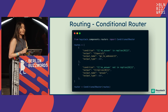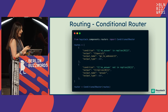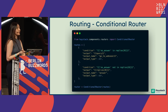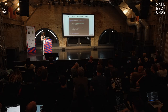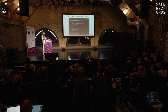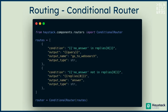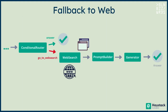Then I define the conditions in my conditional router. Following Jinja syntax, I check the replies coming from the LLM. If I find the 'no answer' phrase, I say to direct the query to the GoToWebSearch branch. As the else statement, I check the replies again — if 'no answer' is not found in the reply, which means there was a valid answer, I just return that as the answer to the query. I pass these routes or conditions to my conditional router as I initialize it.